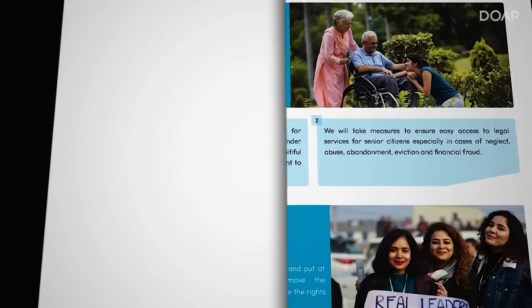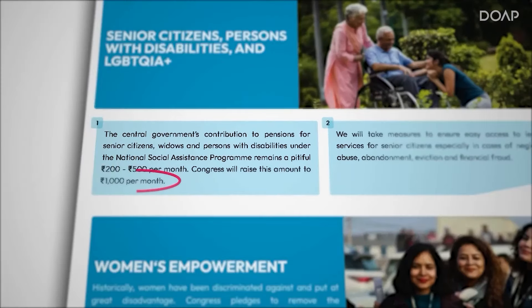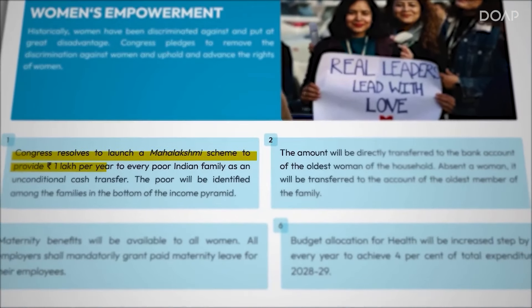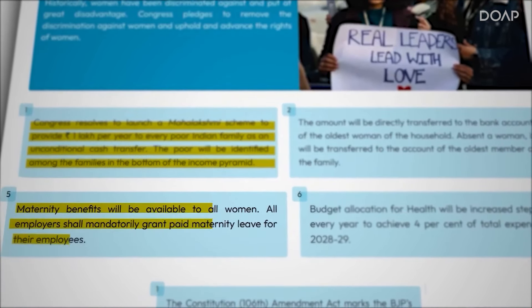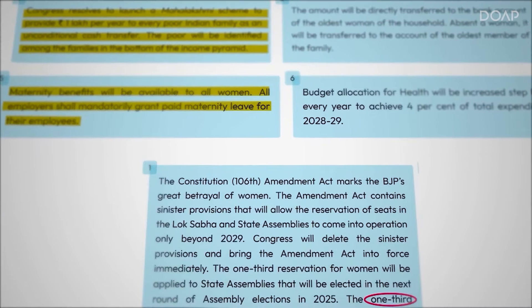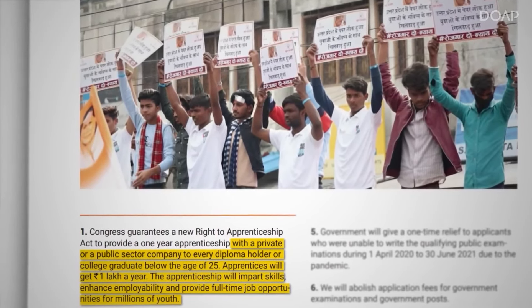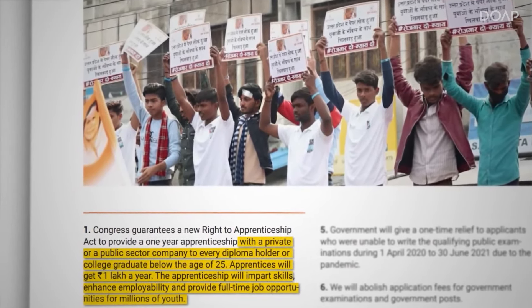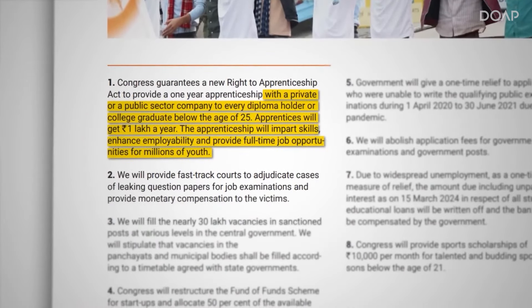Congress has also divided their schemes into three parts. For senior citizens, they want to guarantee a pension of ₹1,000 per month. Congress also wants to resolve the Mahalakshmi scheme, which promises to give one lakh rupees to every poor Indian family, providing maternity benefits to women in the workforce and granting paid leave. They also want to reserve one-third of seats for women in parliament. For youth, the benefit would be apprenticeships — every government official would need to provide internships to the youth, and if not, youth can file a court case. Congress also promises a one-time payment to all UPSC aspirants who were unable to give the examination during COVID.